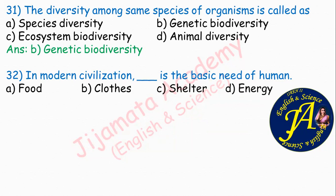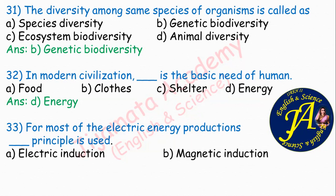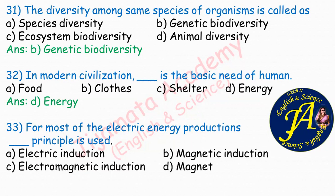In modern civilization, energy is the basic need of humans. For most electric power and energy production, dash principle is used. Options are electric induction, magnetic induction, electromagnetic induction, magnets. Correct answer is option C: electromagnetic induction.